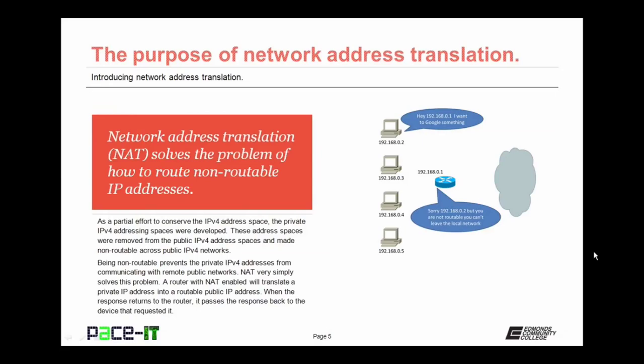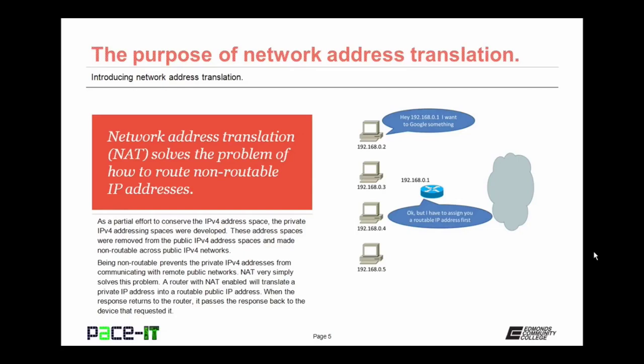Network address translation, or NAT, solves a very serious problem of how to route non-routable IP addresses. As a partial effort to conserve the IPv4 address space, private IPv4 addressing spaces were developed. These address spaces were removed from the public IPv4 address space and made non-routable across public IPv4 networks. Being non-routable prevents that private IPv4 address from communicating with remote public networks. NAT very simply solves this problem.